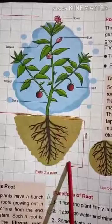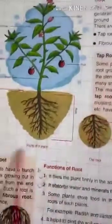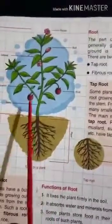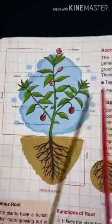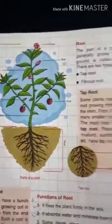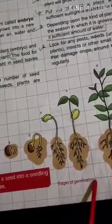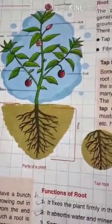So write this exercise in your book and complete the question answers in your general science notebook. In this chapter you also have to draw two diagrams: parts of a plant — draw the picture and mention all the parts — and stages of germination. Draw both diagrams in your notebook. Thank you.